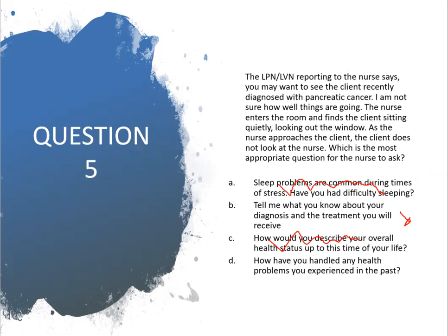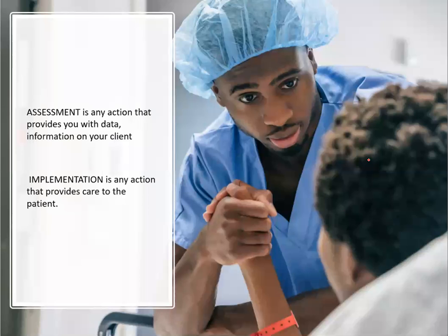Option D — 'How have you handled any health problems you experienced in the past?' — also open-ended, but doesn't focus on the right-here, right-now problem; eliminate it. So option B remains the best answer choice. These are the key points you need to note: identifying assessment versus implementation questions, knowing your priority questions, and applying the decision tree systematically.